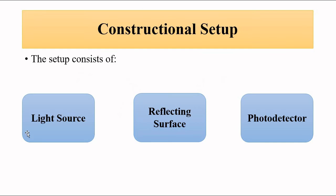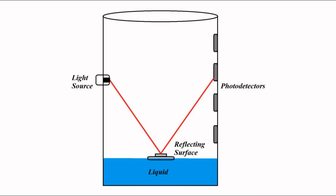This level measurement method involves an optoelectronic source — LED or laser — a reflecting surface which is a mirror, and a series of photo detectors. The signal obtained from the photo detectors can be converted into a suitable amplified signal through signal conditioning, amplification, filtering, noise cancellation, and linearization. It is then converted into a proper digital signal using analog-to-digital conversion techniques — sampling, quantization, and coding — to get a proper digital readout.